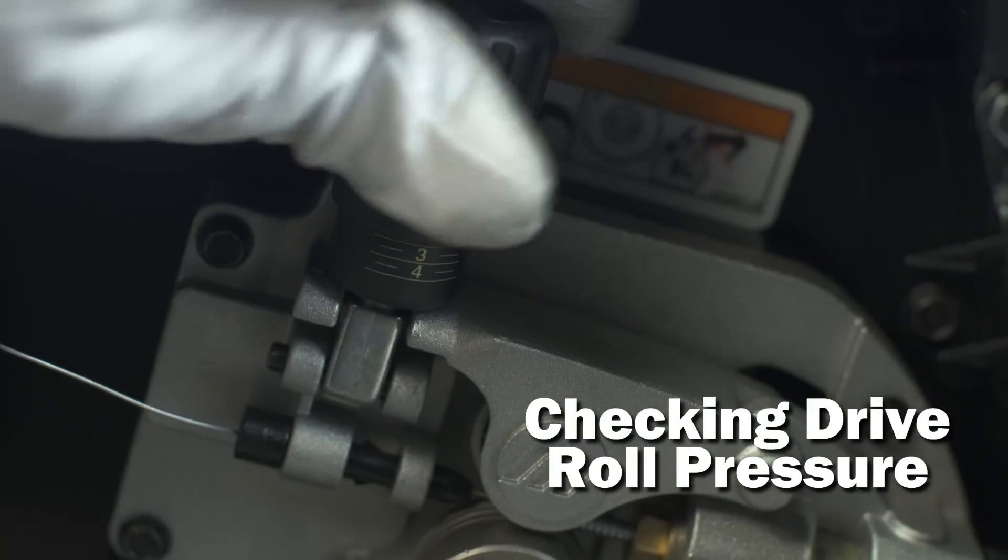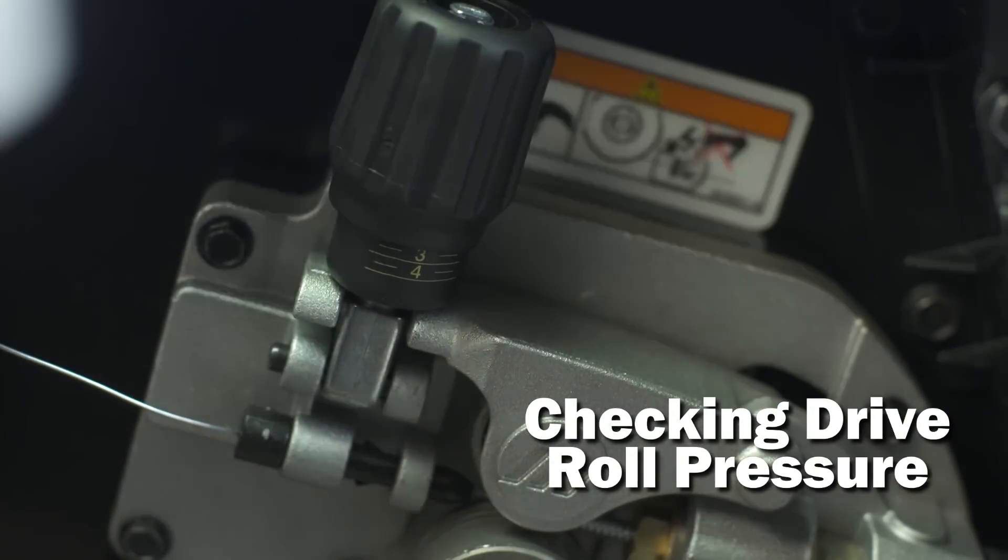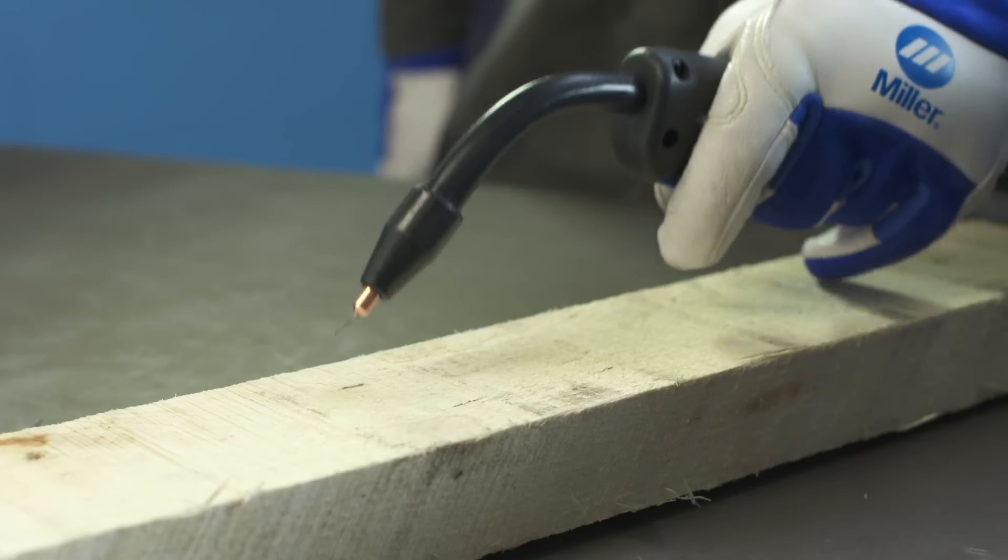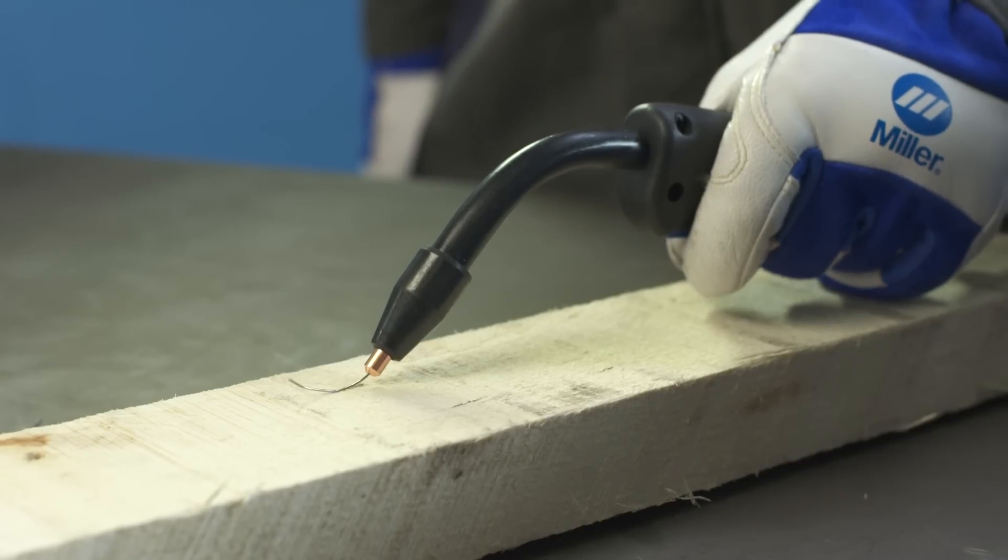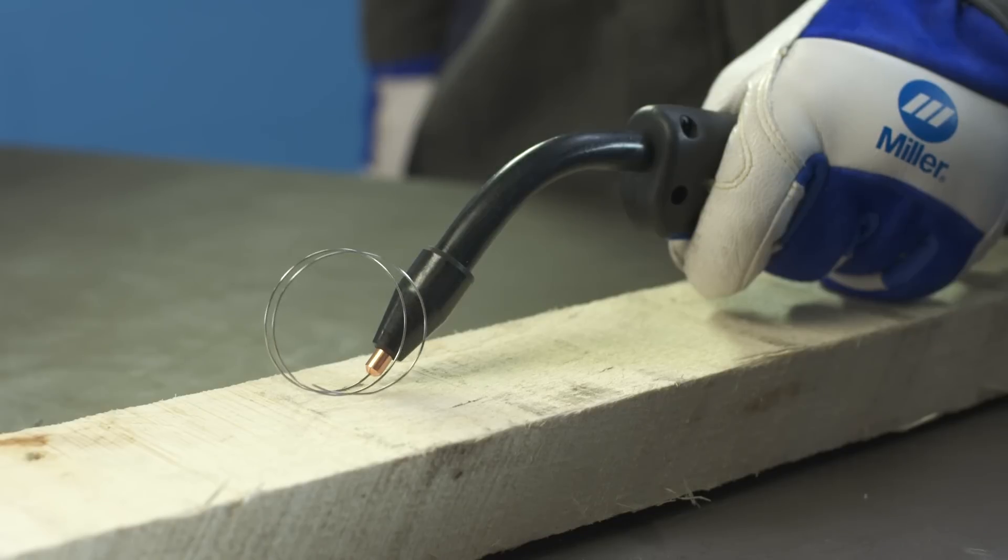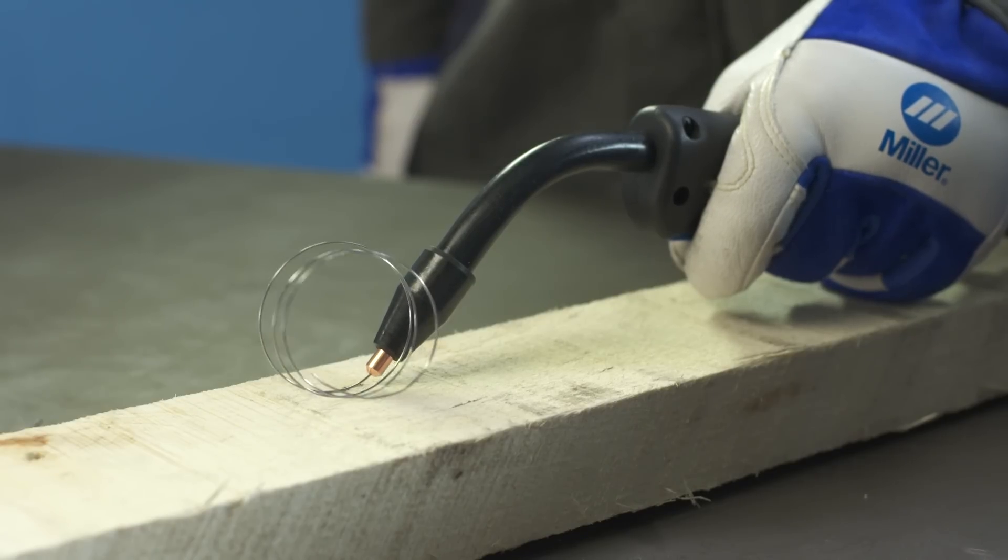Finally, check the drive roll pressure to ensure a trouble-free weld. Place your gun tip over an insulated surface like this wood block and feed the wire until it feeds consistently and curls on the wood without slipping. Adjust the tension as needed.